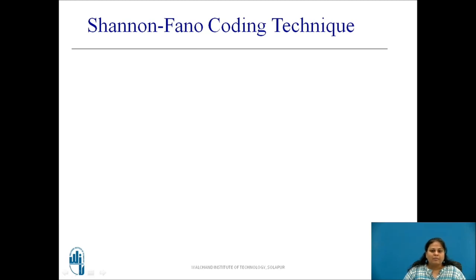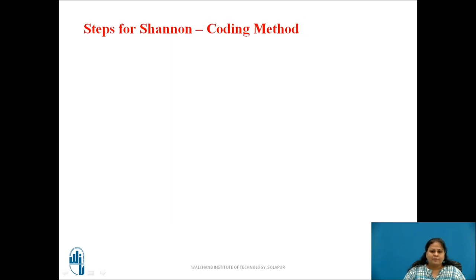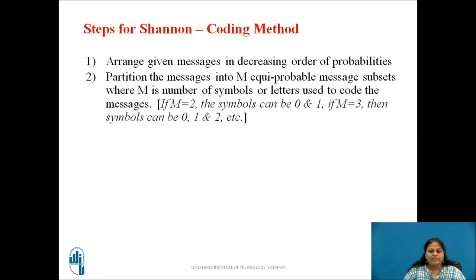Now with this background about coding techniques, let us study Shannon-Fano coding technique. Shannon-Fano coding technique is one of the source coding methods. It constructs reasonably efficient, separable binary codes. The steps involved in coding the message using Shannon-Fano coding are as follows. First, arrange the given messages in decreasing order of their probabilities. Next, partition these messages into m equiprobable message subsets, where m is the number of symbols or letters used to code the messages.